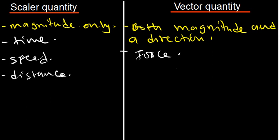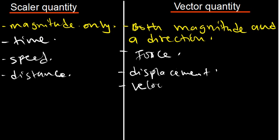We can think of displacement. Displacement and distance are the same thing, but the only difference comes in when you change the direction. Let's also talk of velocity. Velocity is also measured in meters per second, and so is speed, but these two things are different because speed is a scalar quantity and velocity is a vector quantity.